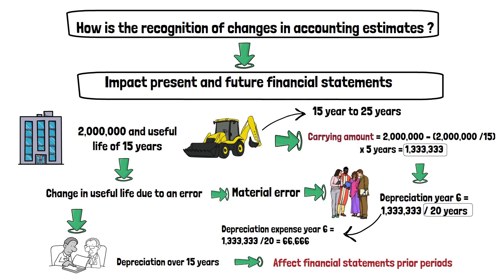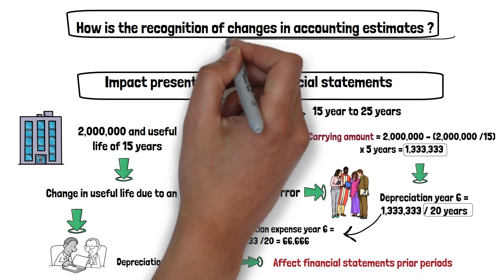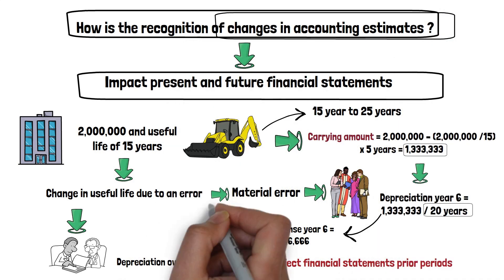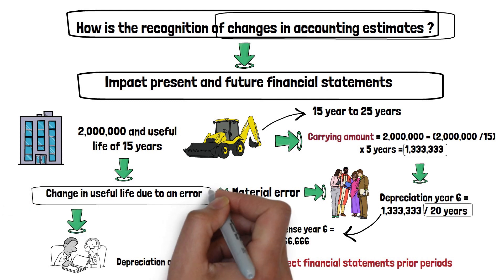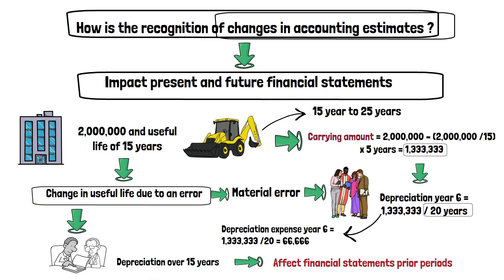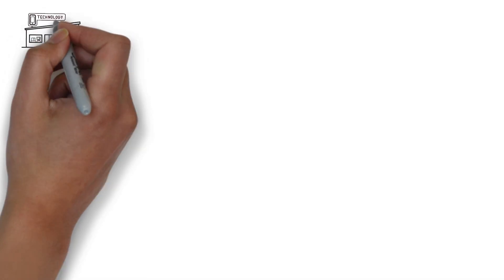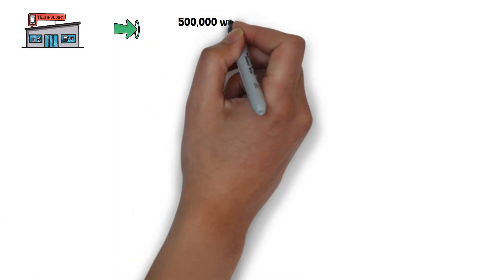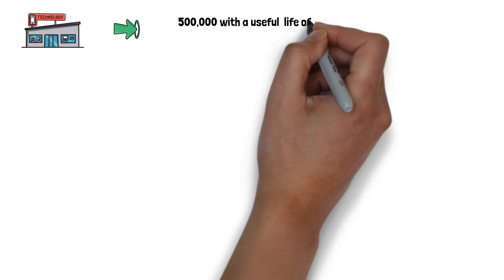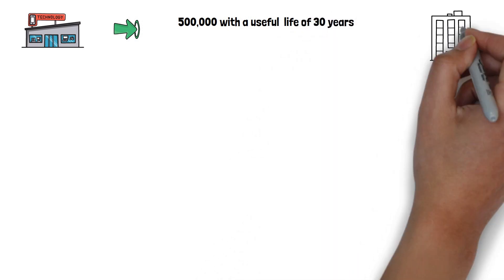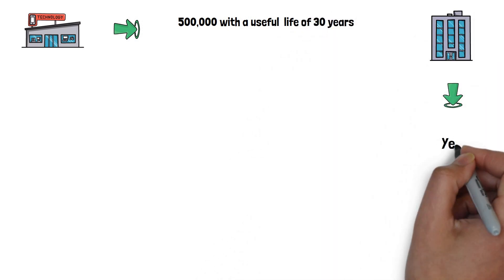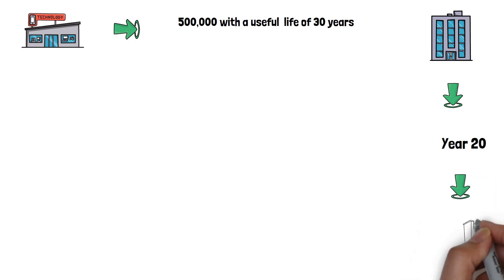Going back to the example analyzed, we see that a change in an accounting estimate and an accounting error are very different. Let's see a series of practical examples to understand this topic easily. In the first example, an entity acquires a building for 500,000 with a useful life of 30 years. The company estimates that in year 20, it will sell the building for 80,000.